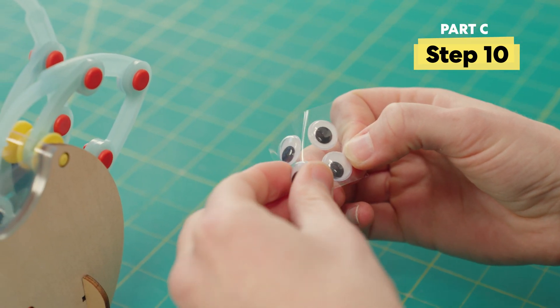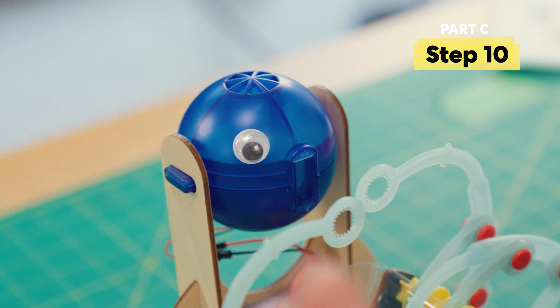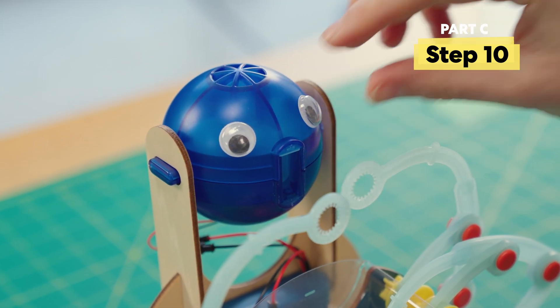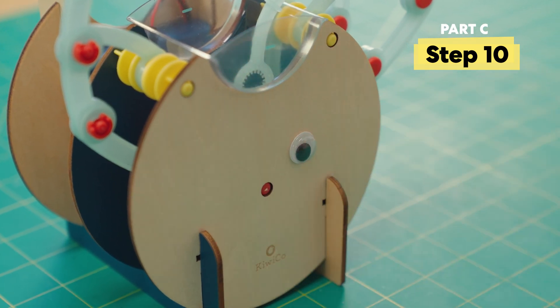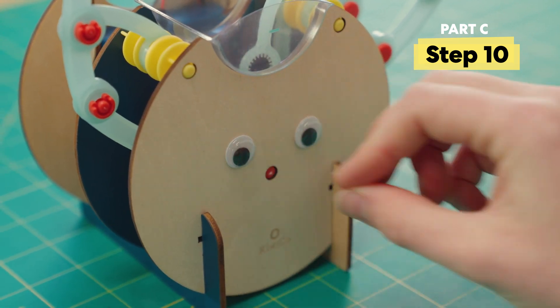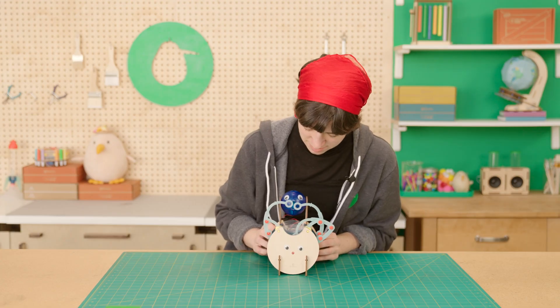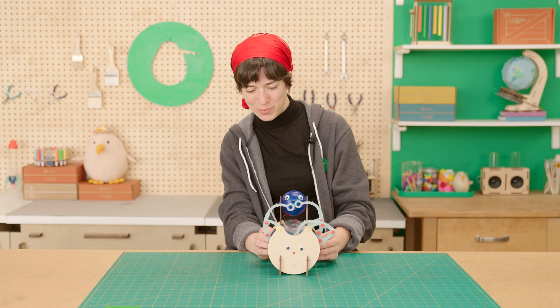Now for the piece de resistance. Wiggle eyes. I think my bubble machine needs two sets of eyes because he's got too much character. All right. Woohoo, it works.